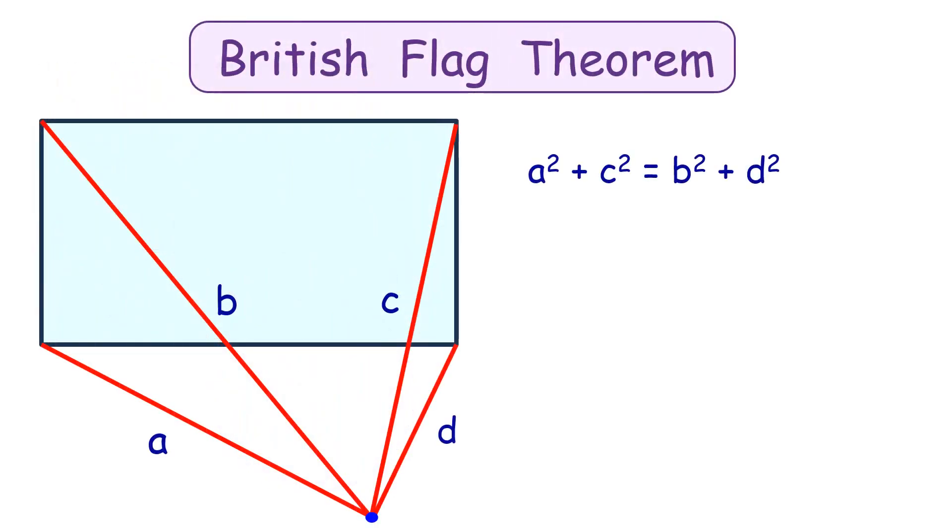To solve this question, we will be using the British Flag Theorem. As per the theorem, if the distances of the vertices of the rectangle are given from a point—that is, distances a, b, c, and d are given.